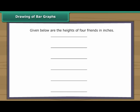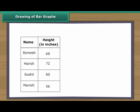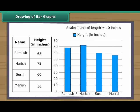Drawing of bar graphs: Let us now draw a bar graph with the help of the given data. As the heights are concentrated near 60, let us measure 10 inches per unit of length. Now let us draw vertical bars. The height of the bars is decided by the heights of the boys in inches. The taller the boys, the taller the bars.